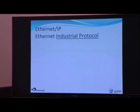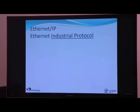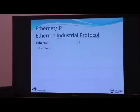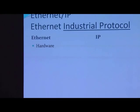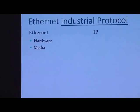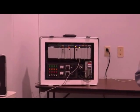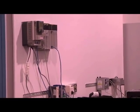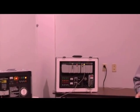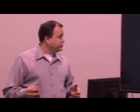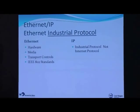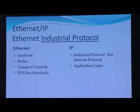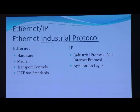Let's take a moment to define the difference between Ethernet IP and Ethernet, or industrial Ethernet. Ethernet is the hardware — the switches, routers, hubs, patch panels, and media like fiber, CAT 6 and CAT 5 cables — all of which meet the IEEE 802 standards. It's the same Ethernet you see in your office or at home. The IP part of Ethernet IP stands for Industrial Protocol, not internet protocol, which can be a confusing point. Ethernet Industrial Protocol lives in the application layer of the OSI reference model.